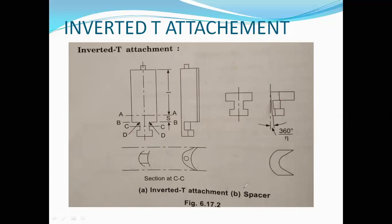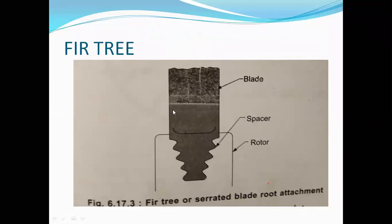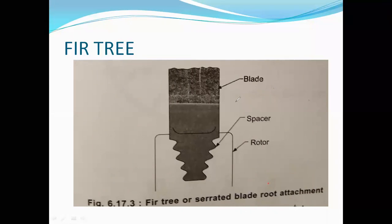Next we will discuss the fur tree attachment, also called the serrated blade root attachment. In the fur tree, there is a spacer in the root region. Let's examine how this attachment works.